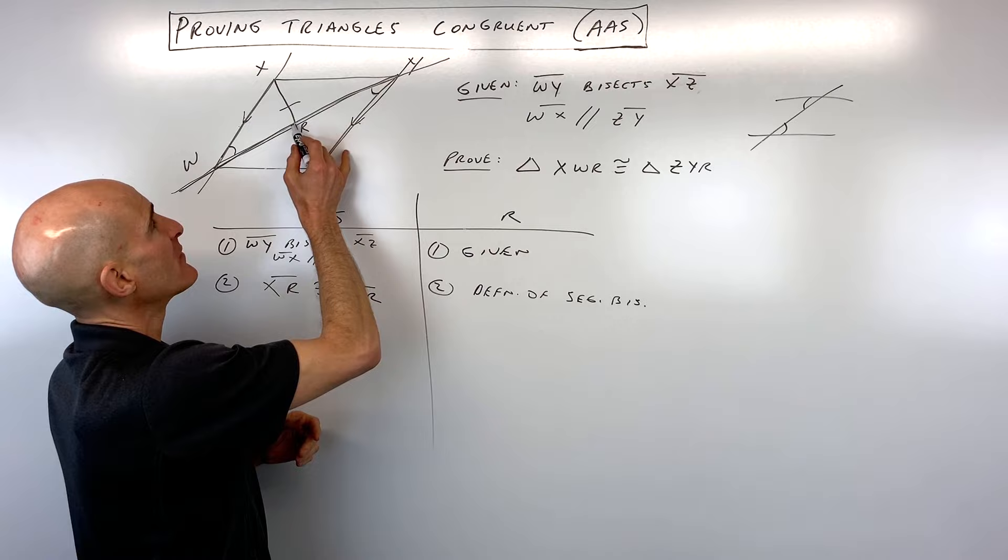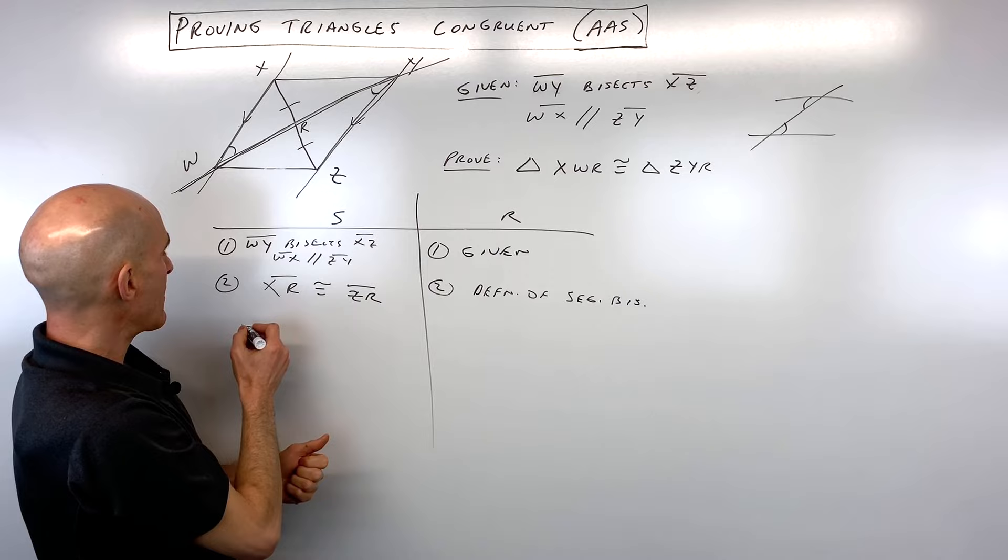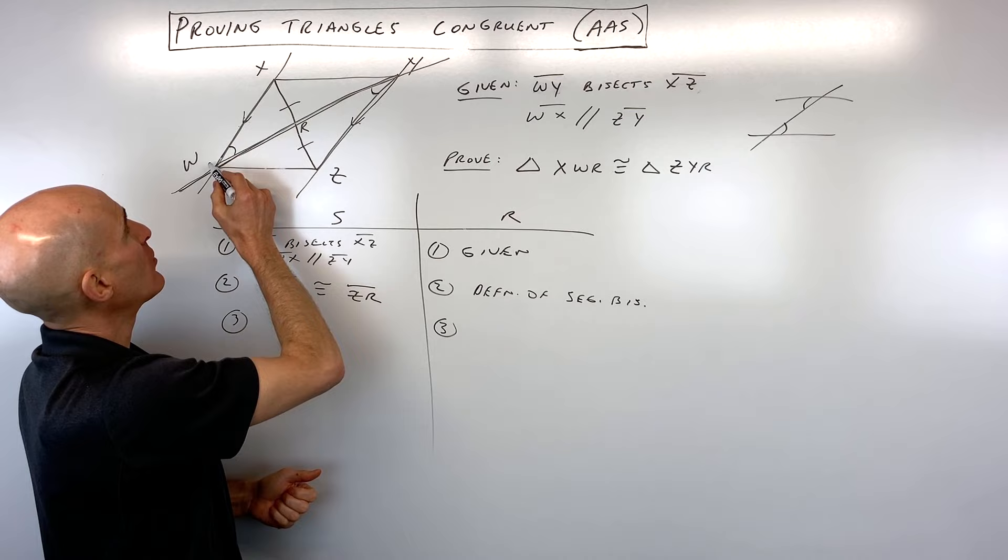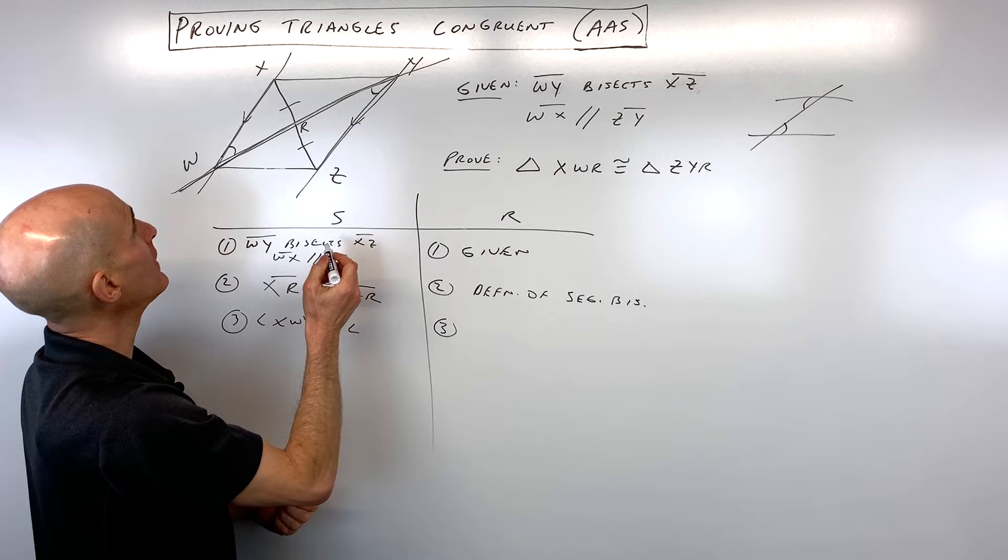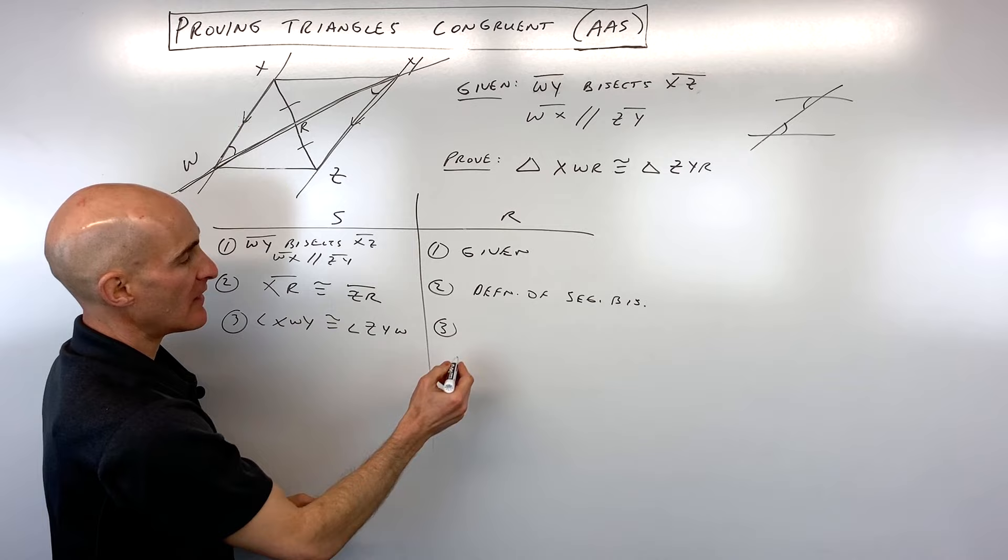So again, we might like to mark that on the diagram. I also like to make it as a step in the proof when I figure something out from the givens. So that means that angle XWY is congruent to angle ZYW. And that's by alternate interior angles. So I'm just going to abbreviate.